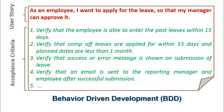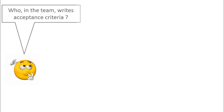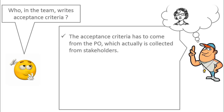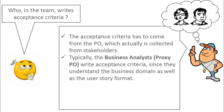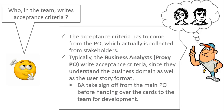The development of the feature is driven by the expected behavior. The BDD approach helps in minimizing expectation mismatch at a later stage and brings all stakeholders' understanding to the same page. Now, who in the team should write the acceptance criteria? While the acceptance criteria has to come from the product owner — collected from stakeholders — typically the business analyst or proxy product owners write it, since they understand the business domain as well as the story format. They take sign-off from the main product owner before handing over the card to the team for development. However, there is no restriction as such. Over time, after gaining some maturity, even dev team members can write acceptance criteria and take sign-off from the product owner.